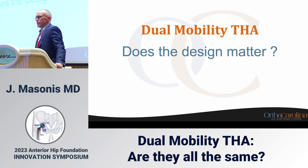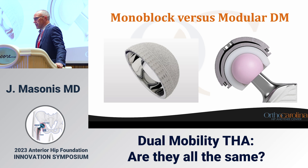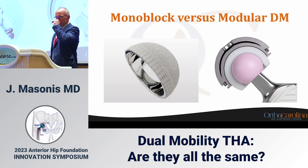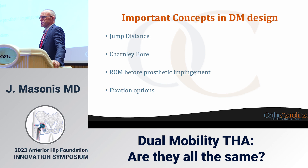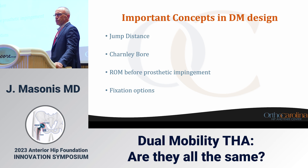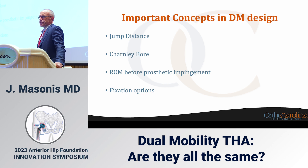I've been given the task of talking about design — is there a difference between designs, are there winners and losers in a dual mobility world? Monoblock versus modular dual mobility is probably the most common debate. Important concepts in dual mobility articulations include: jump distance, the Charlie boer, range of motion before prosthetic impingement, and fixation options — those are really my top four.